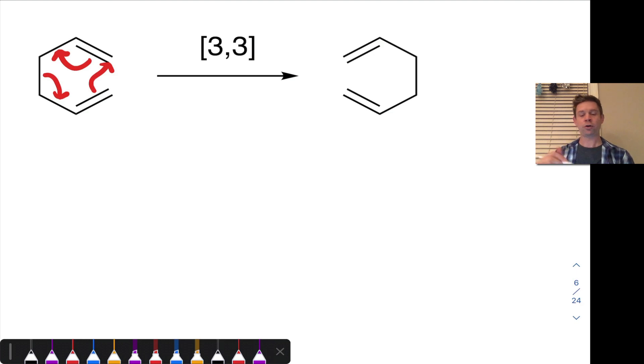And it's called a 3-3 because both ends of the sigma bond migrate over 3 atoms. So at the top, for example, we have 1, 2, 3. And at the bottom, we have 1, 2, 3.